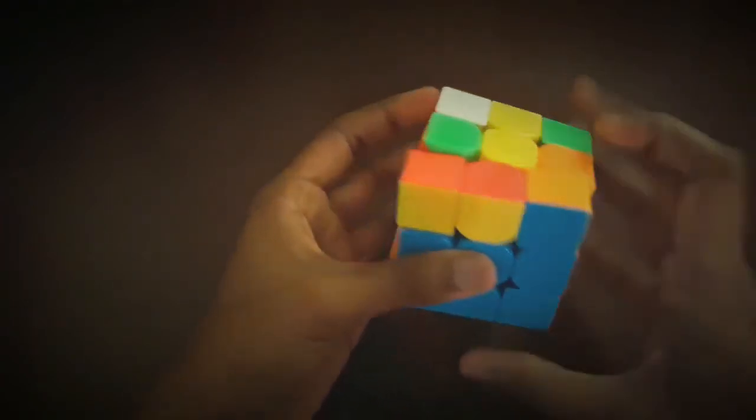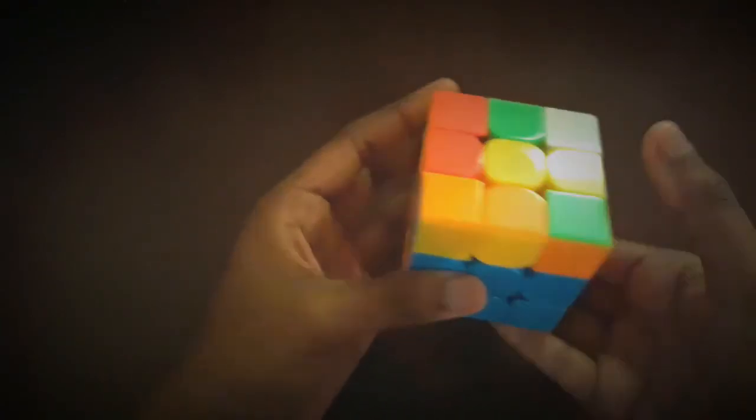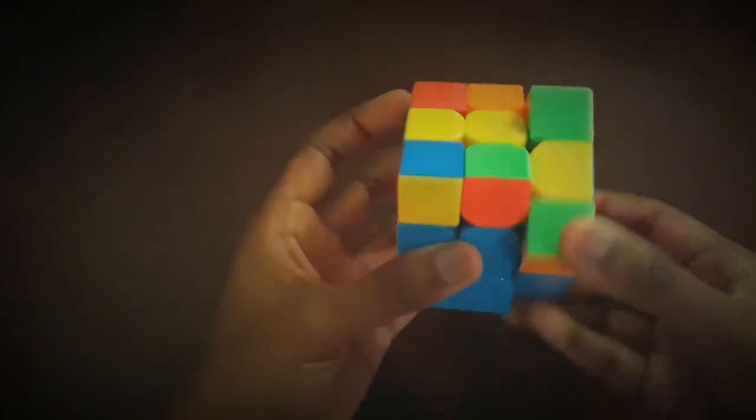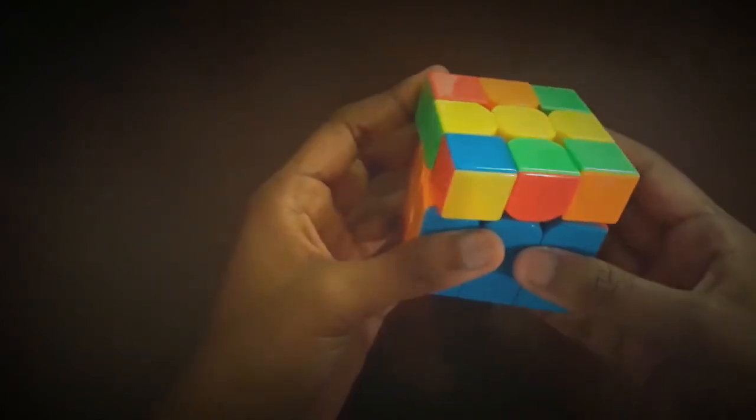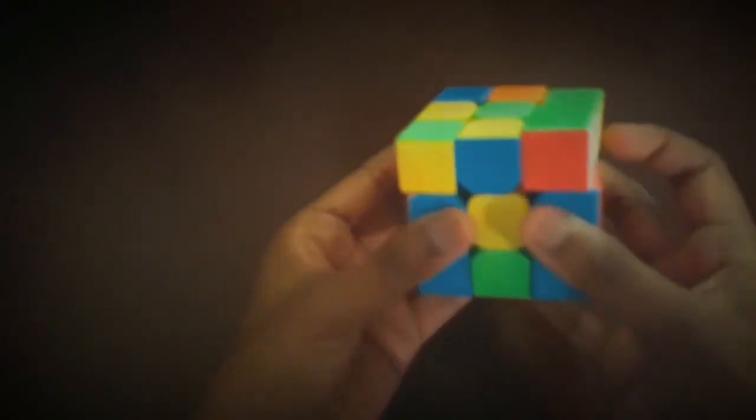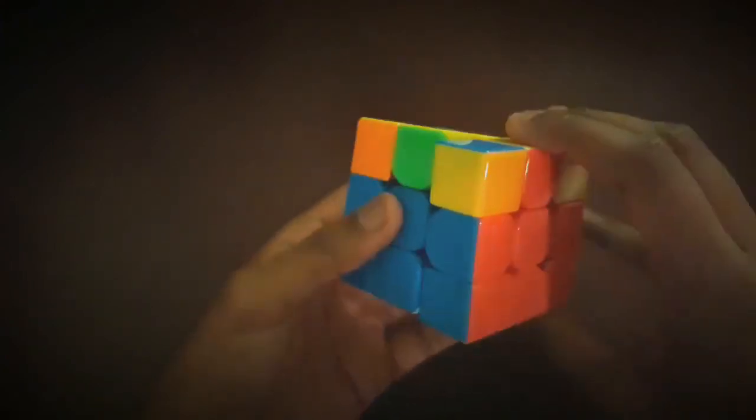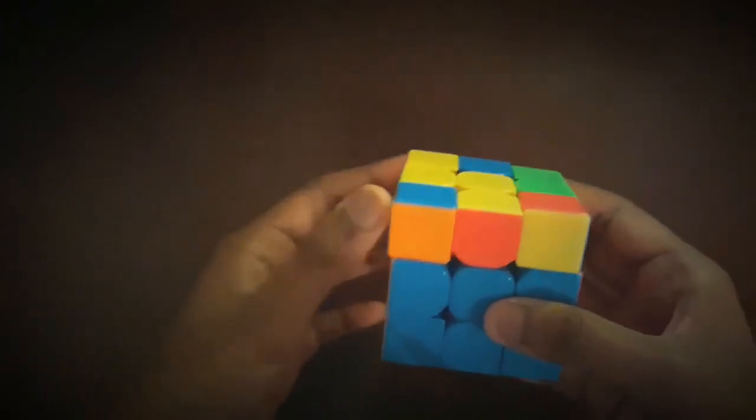This final one is pretty tricky to do, so I'd first separate the pieces up and then move around the corner and then use the M moves to pair the pieces up and insert them in. And then we're done. So that's the end of the walkthrough solves.